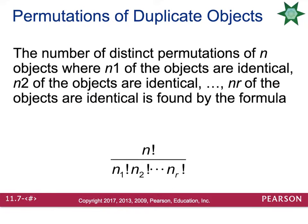Now, so far, everything we've done has not had duplicates. So for example, we didn't have like two people named Bob in the president, vice president situation. When you have duplicate objects in a set, you need a special formula.